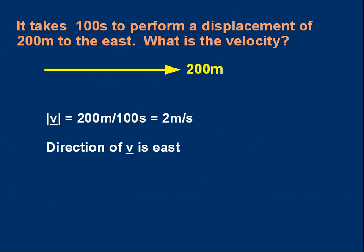And the answer is: to work out the velocity we need the magnitude and the direction. The magnitude, which is the speed, is simply the magnitude of the displacement, which is the distance — 200 metres — over the time, 100 seconds. So the magnitude of the velocity is two metres per second. And the direction of the velocity is east. Don't forget, you're expected to give a direction if you're stating what a vector is. Direction is east, and that's the same as the displacement. So it's fairly intuitive, I hope.